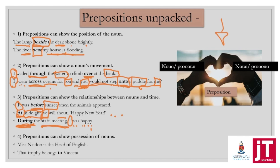Prepositions can also show possession of the nouns. 'Miss Naidoo is the head of English' — it's showing the relationship between English and the fact that she's the head of it. 'That trophy belongs to Vincent.' Trophy is the noun, Vincent is the noun — what's going on with the trophy? It belongs to Vincent. The main thing is it shows the relationship between two nouns and how they assemble in this space.